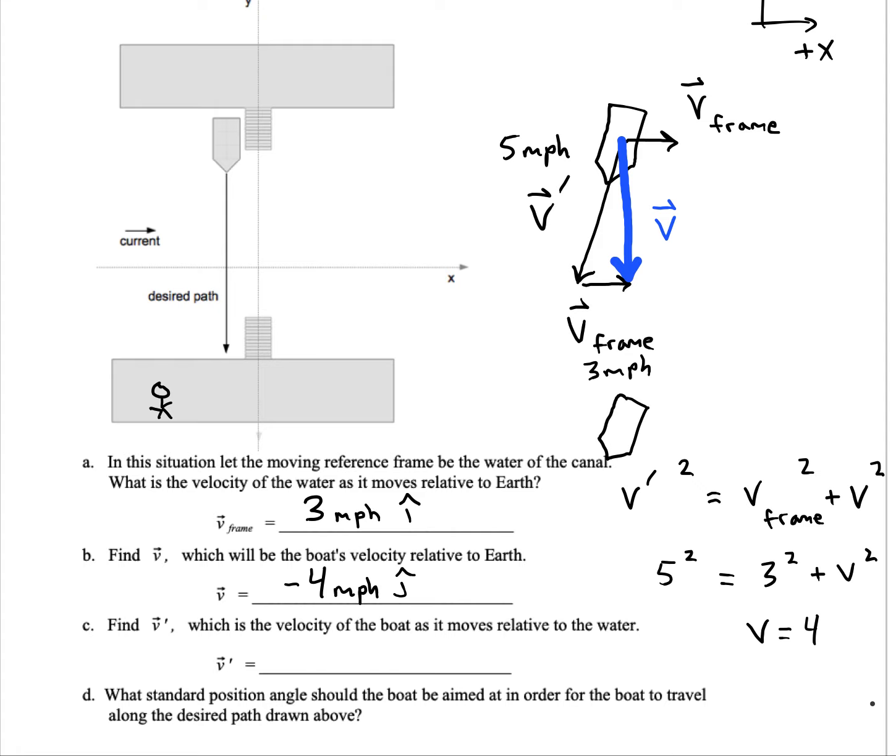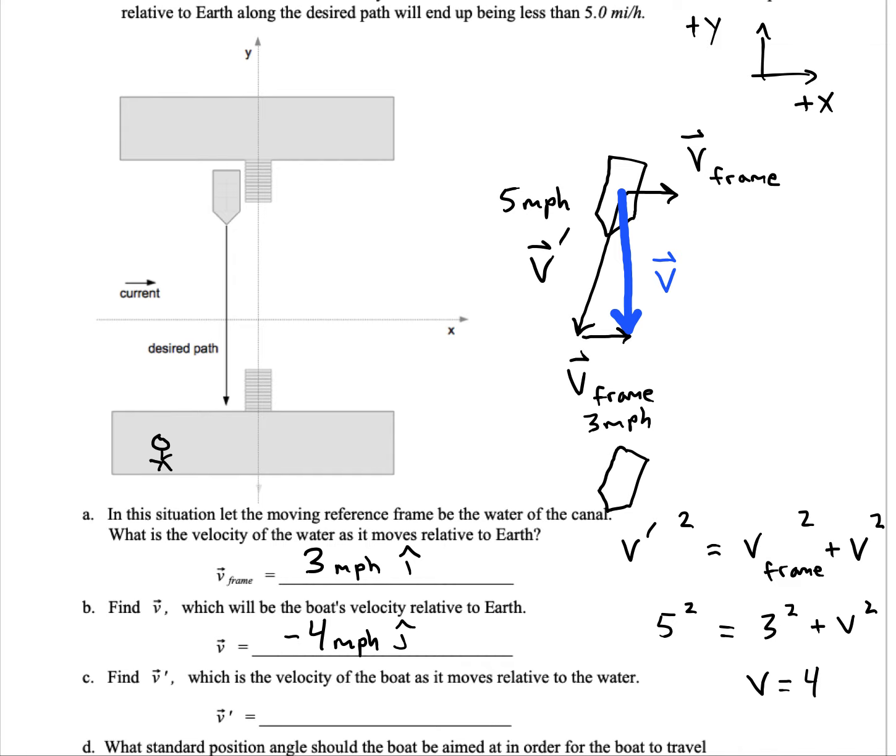Then V prime - how do we express that? That one's not at a nice angle relative to my given coordinate system. You could say 5 miles per hour and then give an angle for it, but another way would be using its components. V prime points this way.